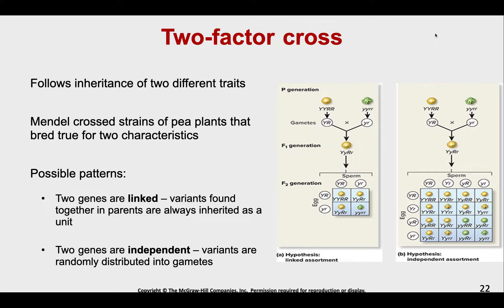So we're following the inheritance of two different traits. We're going to talk about Mendel and his pea plants again. He crossed two strains of pea plants that bred true for two characteristics this time — seed color and seed shape. There are two possible patterns that can emerge: the genes can be linked together, so variants are found together and always inherited as a unit. We'll talk about that a little bit later.